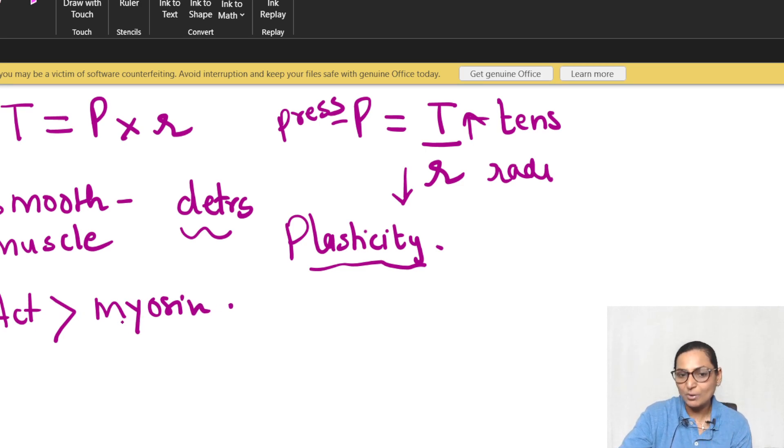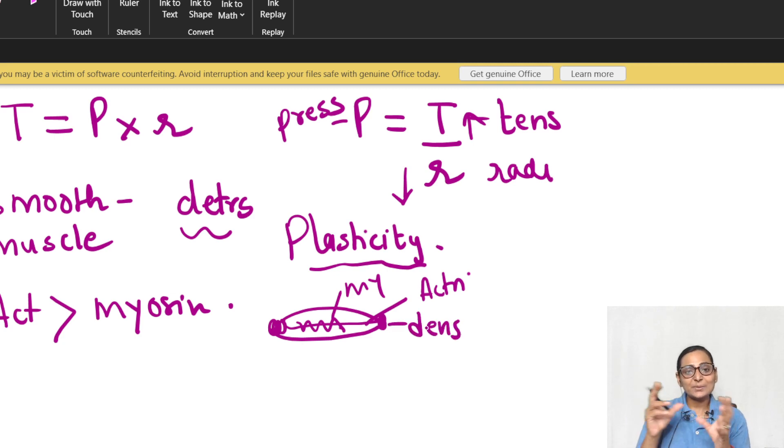Moreover, in smooth muscles, actin is about 10 times more than myosin. The actin to myosin ratio is different in striated and non-striated muscles. Actin is about 10 to 12 times more compared to myosin. They are spindle-shaped with dense bodies. This is myosin, this is actin. Instead of the Z lines, you have dense bodies.